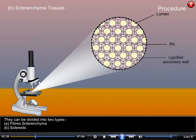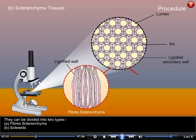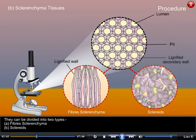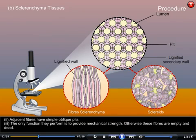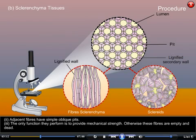They can be divided into two types: A. Fibrous sclerenchyma and B. Sclerides. Fibrous sclerenchyma cells are highly elongated, narrow and spindle-shaped with pointed end walls. Adjacent fibers have simple oblique pits. The only function they perform is to provide mechanical strength; otherwise these fibers are empty and dead.